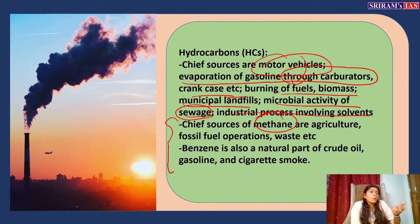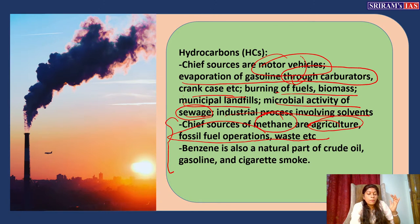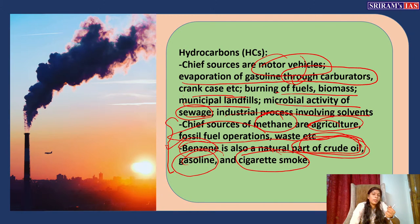A UNEP report highlighted that reducing methane emissions — not just carbon dioxide — is essential for achieving the Paris Agreement goals. The chief sources of methane are agriculture, fossil fuel operations, and waste from sewage. Benzene, a harmful hydrocarbon found in crude oil, is also released through gasoline industries and cigarette smoke.